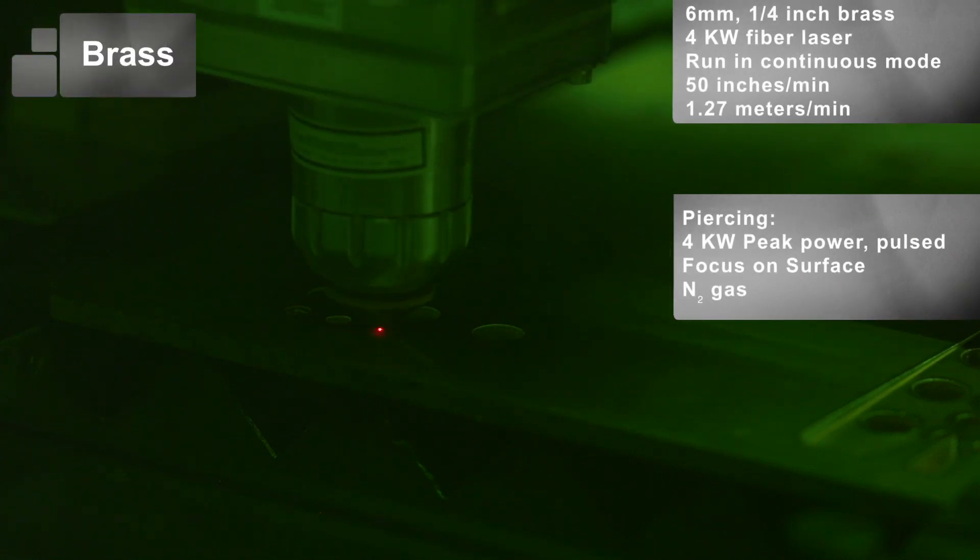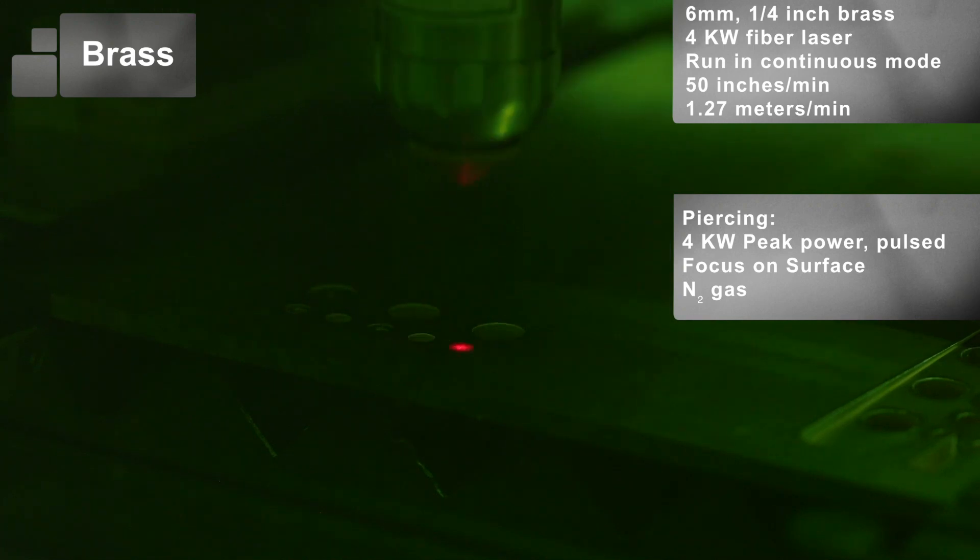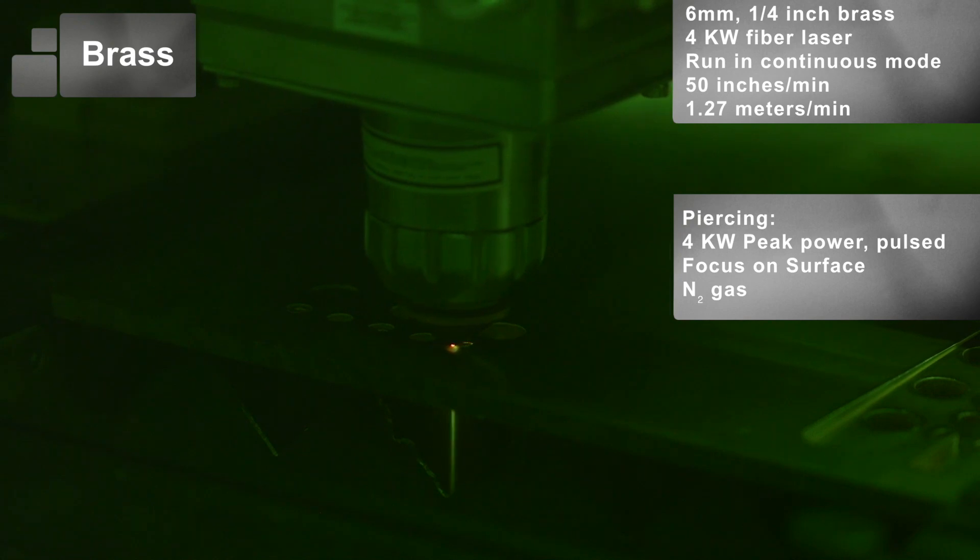In the piercing stage, the material escapes the surface in a particulate form and the laser is in the pulse mode and drills through the thickness of the material and then it transitions to cutting.